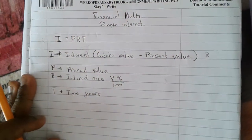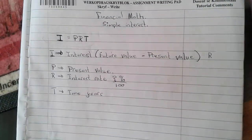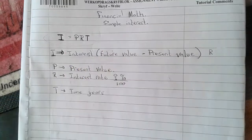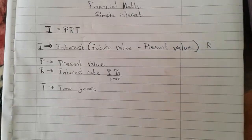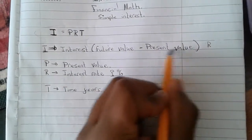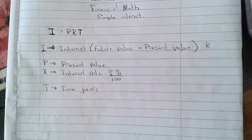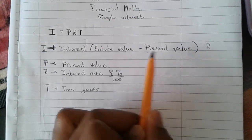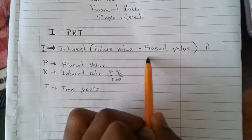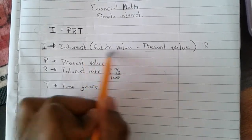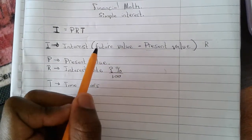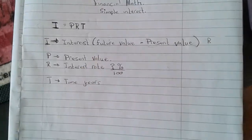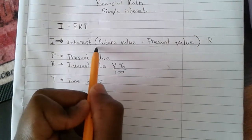Now I want you to take note of something that a lot of people get wrong. The present value is the amount of money that you have now, or that a person has now — usually they will say the person is saving or investing that money now. The future value is the amount of money the person will have in the future, maybe after investing for one, two, or three years.